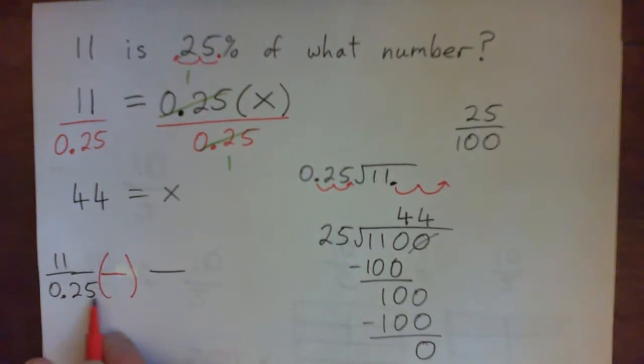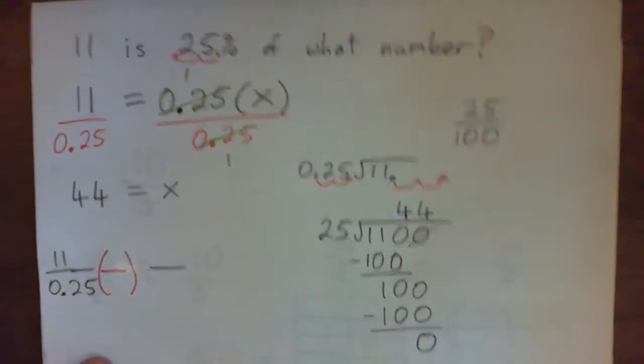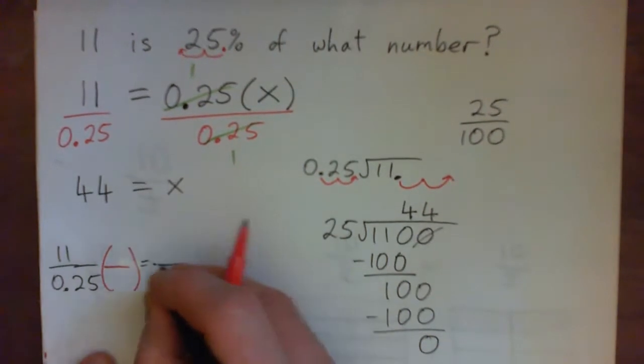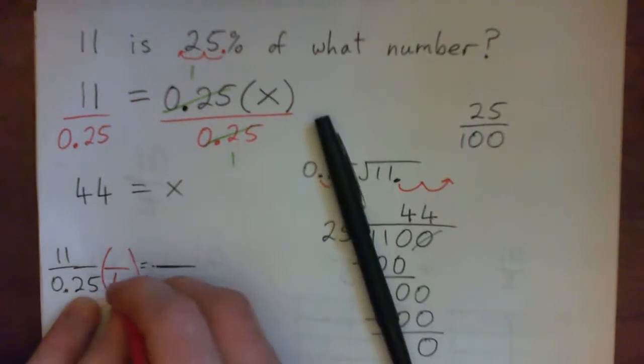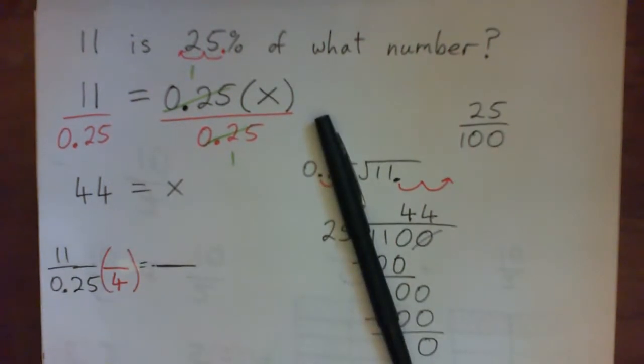What I'm asking is, 0.25 times what will give something that's not a decimal anymore? 0.25 times 4. What is that? Four quarters—how many quarters in a dollar?